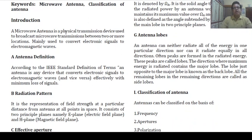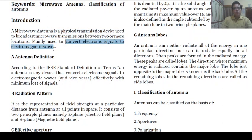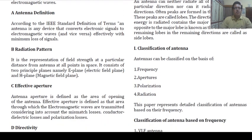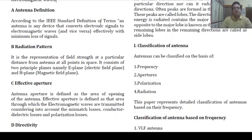Introduction: A microwave antenna is a physical transmission device used to broadcast microwave transmission between two or more locations. It is mainly used to convert electronic signals to electromagnetic waves. According to the IEEE standard definition, an antenna is any device that converts an electronic signal to an electromagnetic wave and vice versa, effectively with minimum loss of signals.